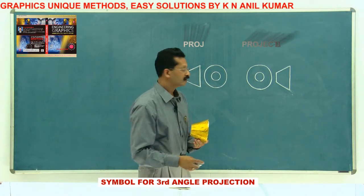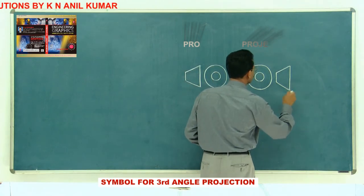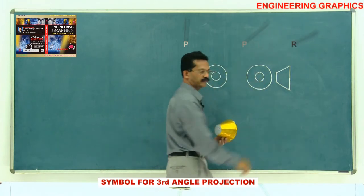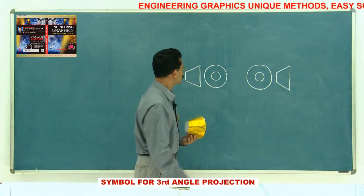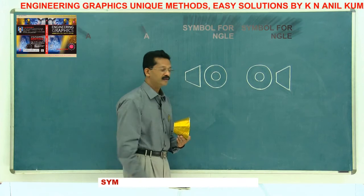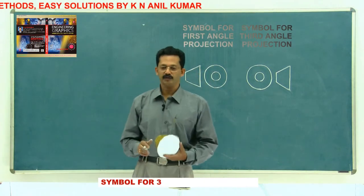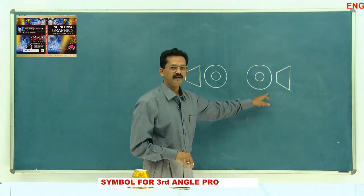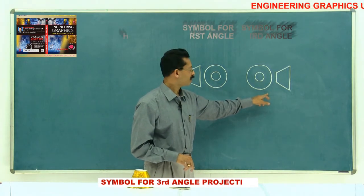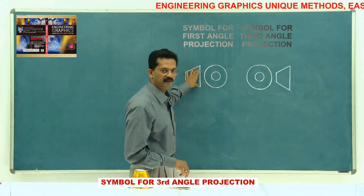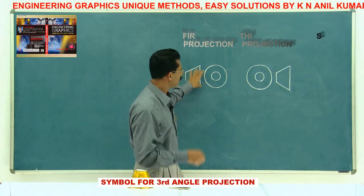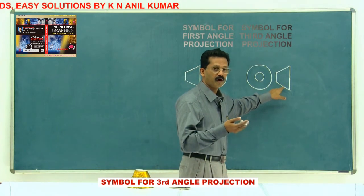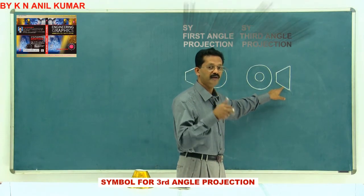If the object is in the seventh octant, the left side view you will get at the left side itself. This shows the symbol for the first angle projection and this is the symbol for the third angle projection. Here the object is in the first octant or first quadrant, and here the object is in the third quadrant or seventh octant.